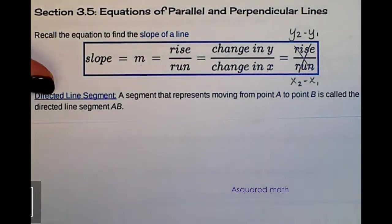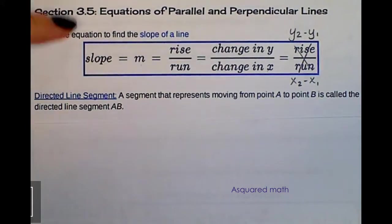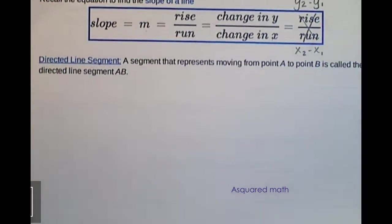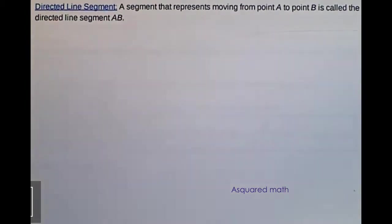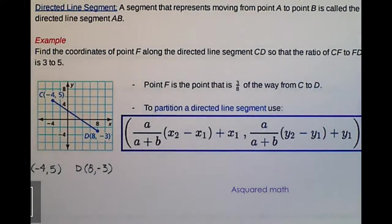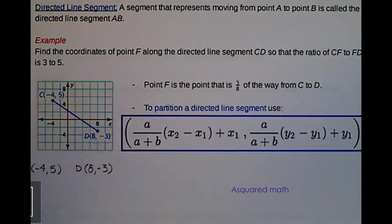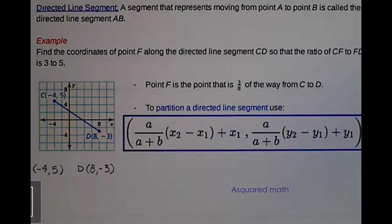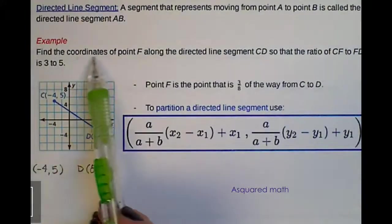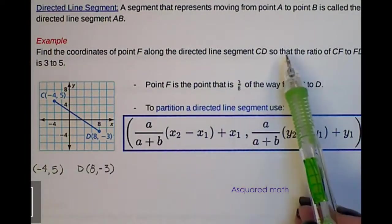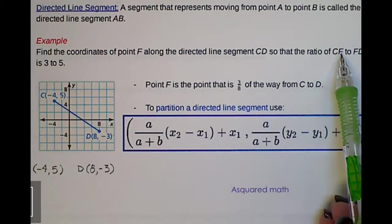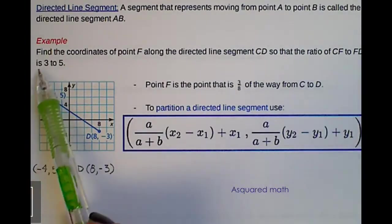We're going to do an example here and introduce you to a new equation that lets us segment or partition a given line into smaller pieces, and then we can figure out the coordinate to the point that's going to give us those smaller pieces or those partitions. So the example I have here says to find the coordinates of point F along the directed line segment CD so that the ratio of CF to FD is 3 to 5.